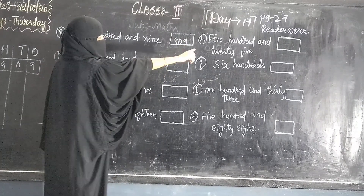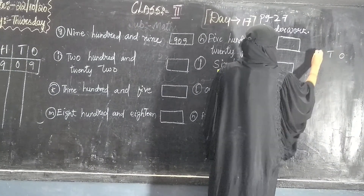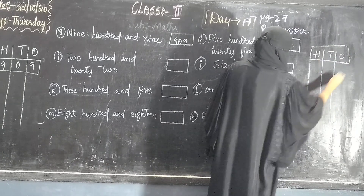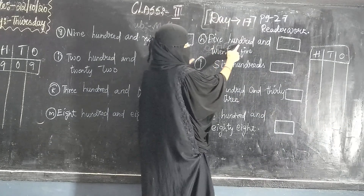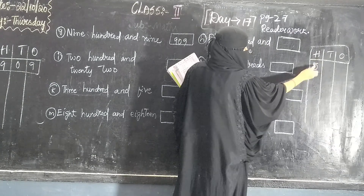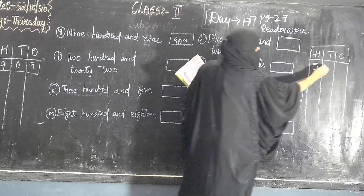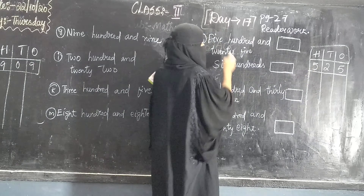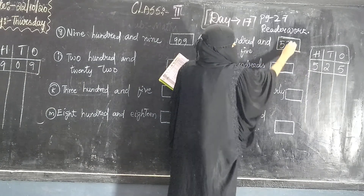Now question number H. We have 500, so we will write number 5, then 100. 500 and 25 — we get the figure of this number. Number 8, that is 525.